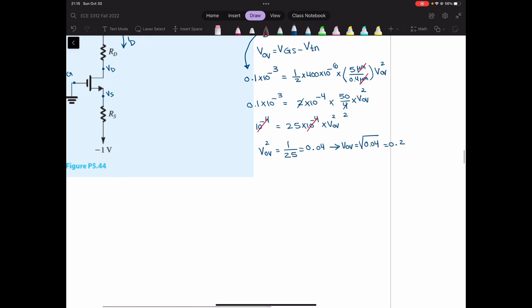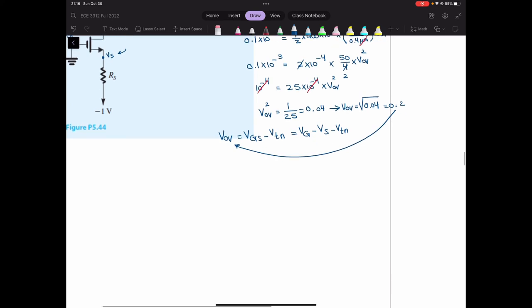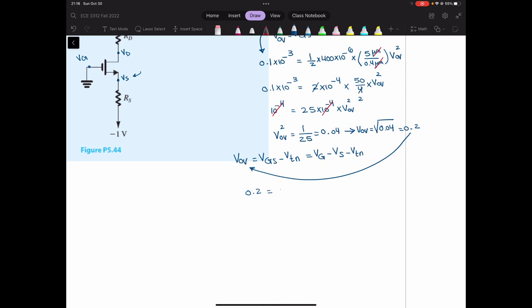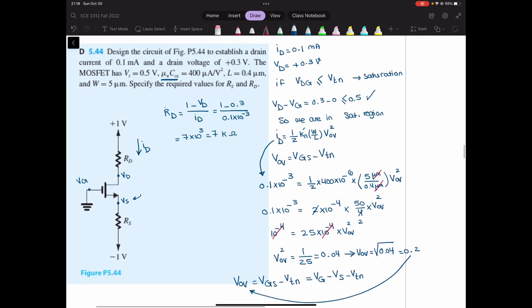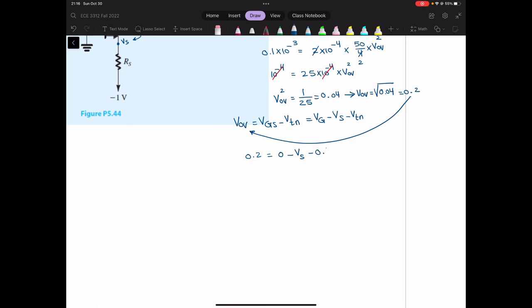So what are we looking for? I'm looking for VS because I need to find VS over here in order to find RS. V overdrive is VGS minus VTN. So that is VG minus VS minus VTN. V overdrive is 0.2. So I have 0.2 equals VG. Gate is connected to the ground, so it's 0. Minus VS is what I'm looking for minus VTN. VT was 0.5. So minus 0.5.